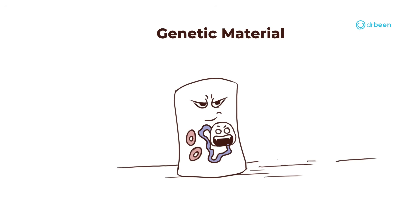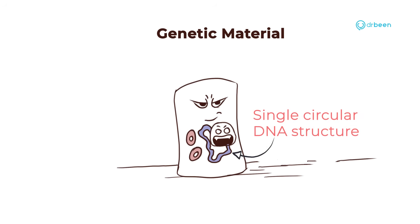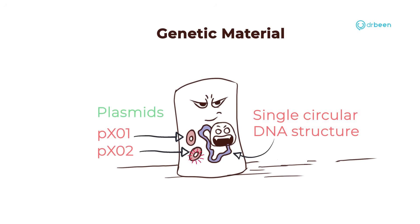But what's its genetic material? Bacillus anthracis' DNA is in the form of a singular circular structure. It also has 2 plasmids, PXO1 and PXO2. These plasmids carry its virulence factors on them.